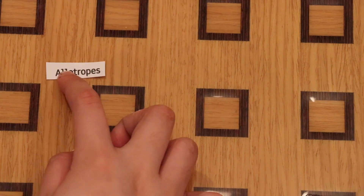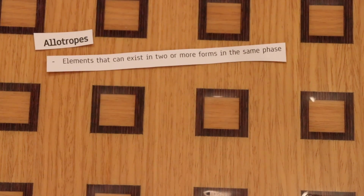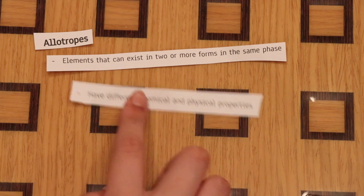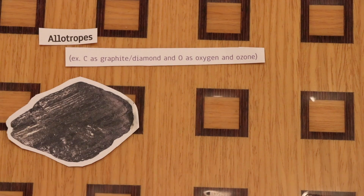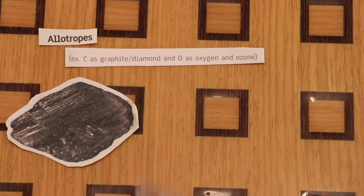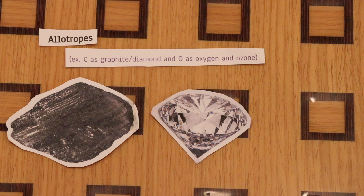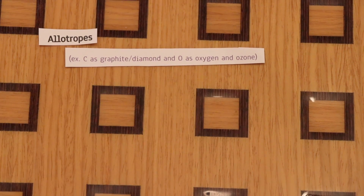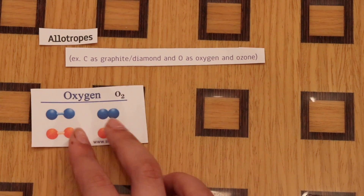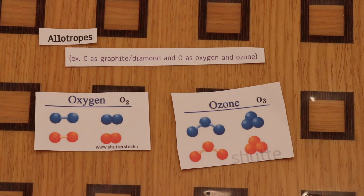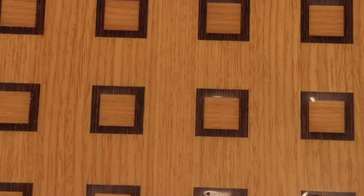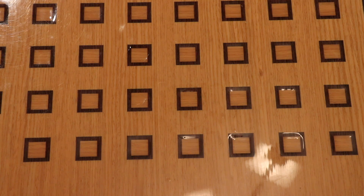Allotropes are elements that can exist in two or more forms in the same phase, and they have different chemical and physical properties. For example, carbon can be graphite or diamond — completely different physical and chemical properties, yet the same element. Another example: O₂ is oxygen, but it can also be ozone — once again, completely different chemical and physical properties.